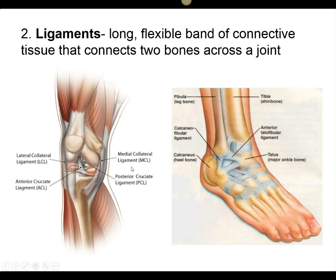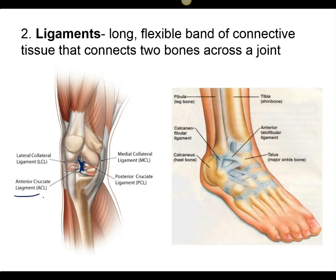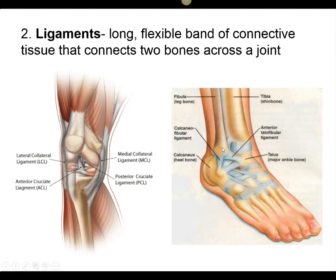Ligaments. A tendon connects a muscle to a bone. A ligament is different — for example, this is your ACL, anterior cruciate ligament. It connects the femur to the tibia — that's bone to bone. Similarly at your ankle, the fibula is connected to the calcaneus or heel bone by a ligament — bone to bone. When you roll your ankles, you typically stretch these out and they become swollen and inflamed. That's what happens when you sprain an ankle.